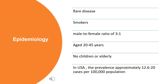What are the epidemiologic features of Buerger's Disease? Buerger's Disease is a rare disease, most commonly affecting smokers. Men are more commonly affected than women, with a male-to-female ratio of 3 to 1, at the age of 20 to 45 years. Children and the elderly are not affected. In the USA, the prevalence is approximately 12.6 to 20 cases per 100,000 population.